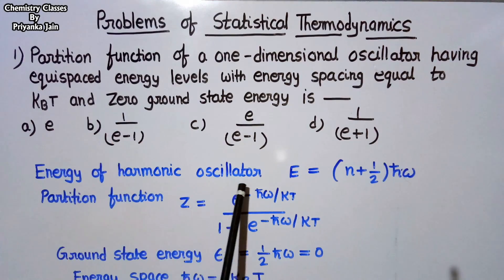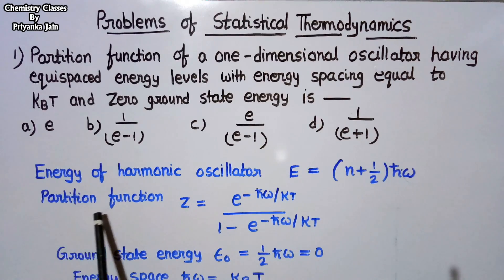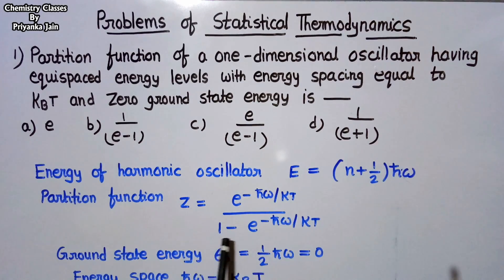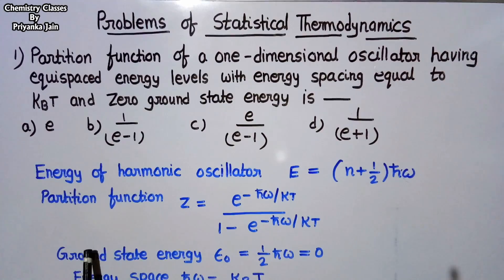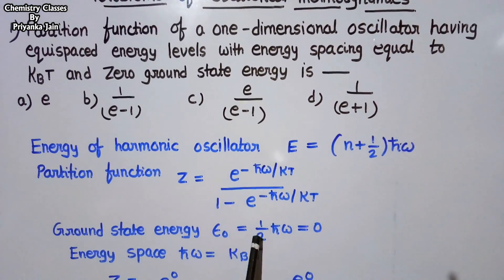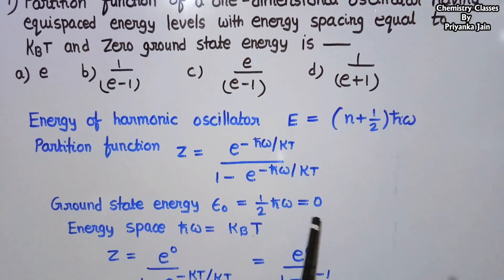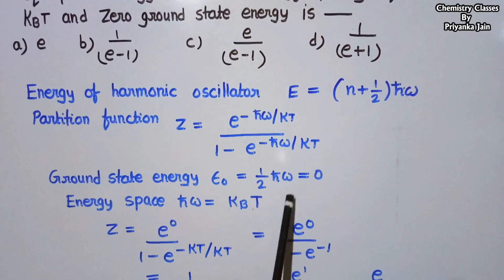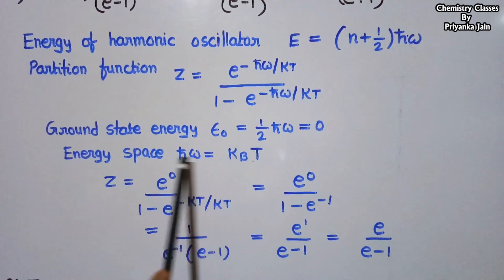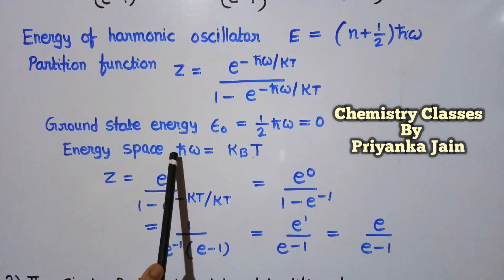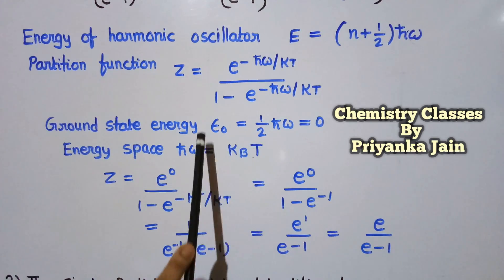The energy of the harmonic oscillator is given by E = (n + 1/2)ℏω. The vibrational partition function is Z = e^(−ℏω/kT) / (1 − e^(−ℏω/kT)). We are given that the ground state energy is zero, meaning (1/2)ℏω = 0, so that term vanishes. Also, the energy spacing equals kBT, and since the energy spacing is ℏω, we have ℏω = kBT.